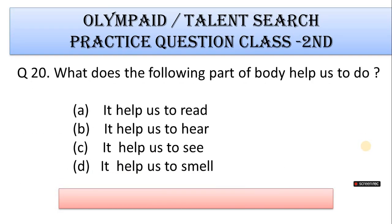Number 20: What does the following part of the body help us to do? A. It helps us to eat, B. It helps us to hear, C. It helps us to see, D. It helps us to smell. Correct answer is Option B. It helps us to hear.